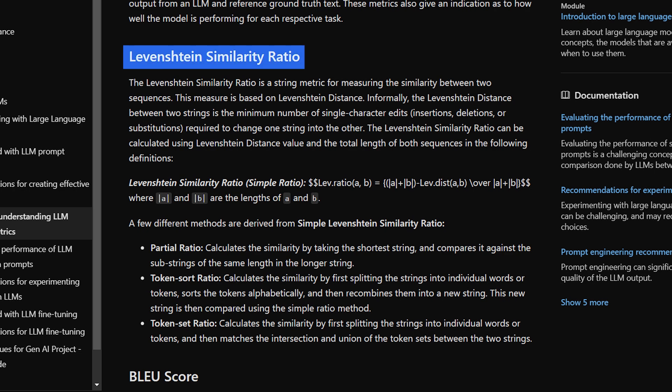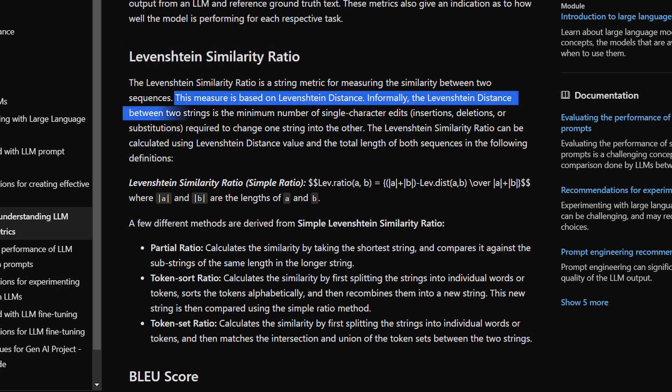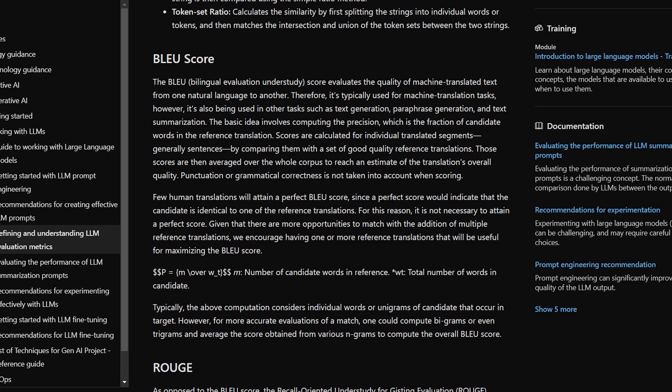There's also the Levenshtein similarity ratio, which measures the similarity between two texts by calculating the minimum number of single-character edits, like insertions, deletions, or substitutions, required to change one word into the other. And lastly, there's Bleu, or Bilingual Evaluation Understudy. This score is commonly used for evaluating machine translation. It calculates how many words or phrases in the machine-generated text match those in a reference translation.